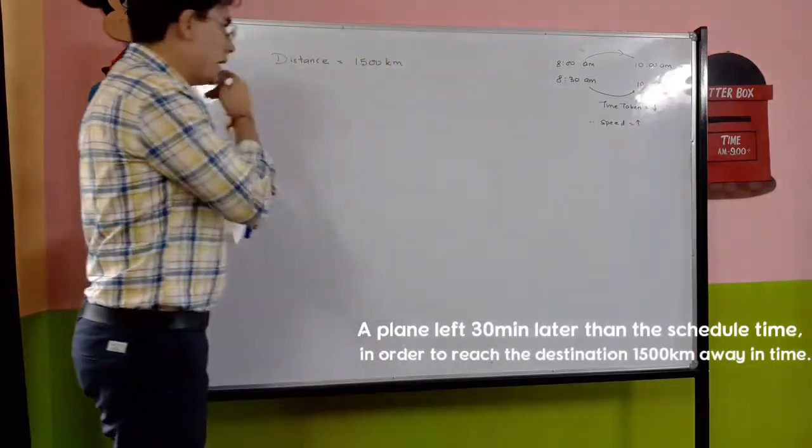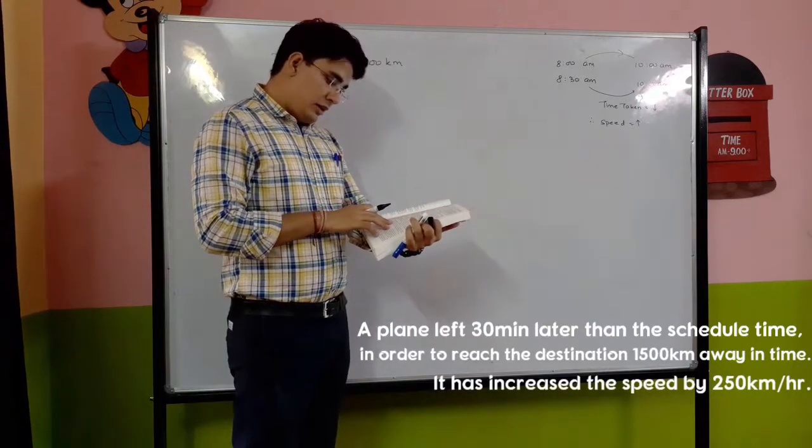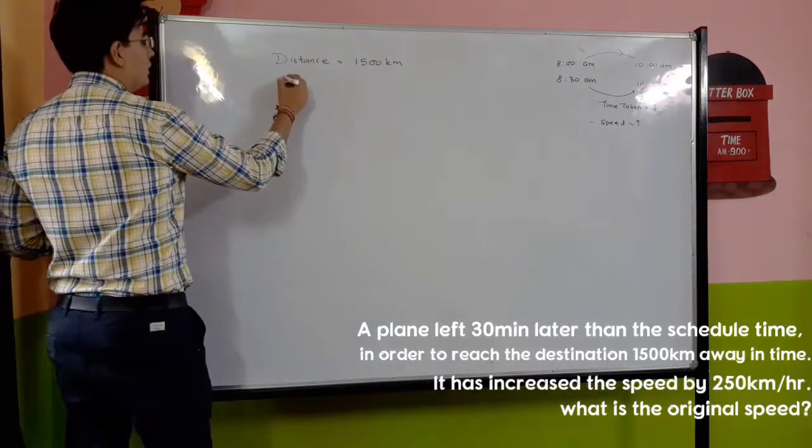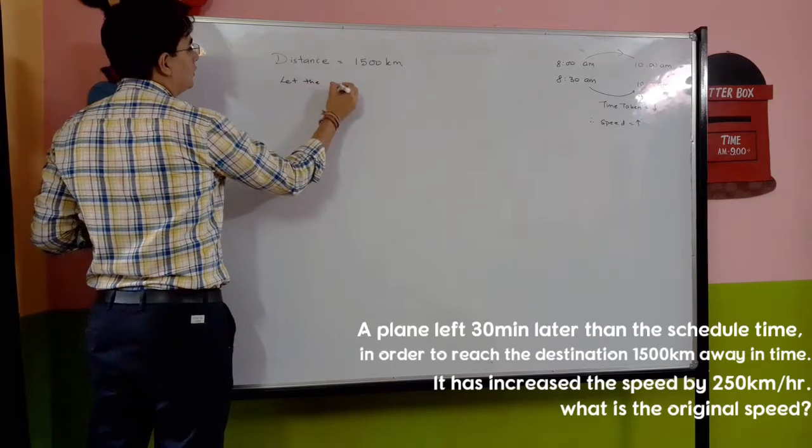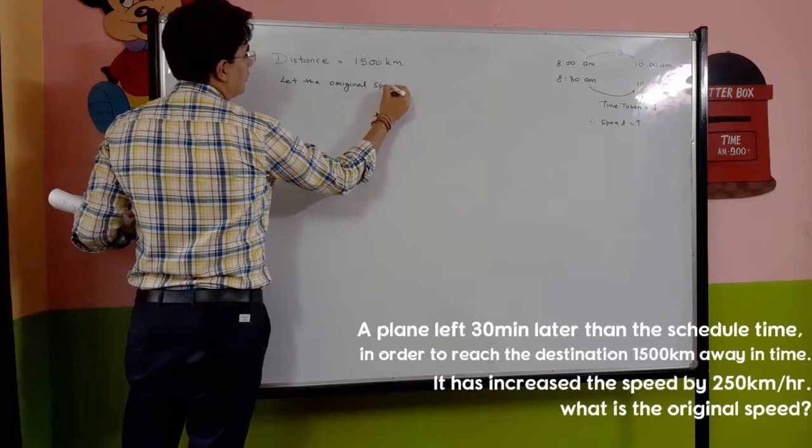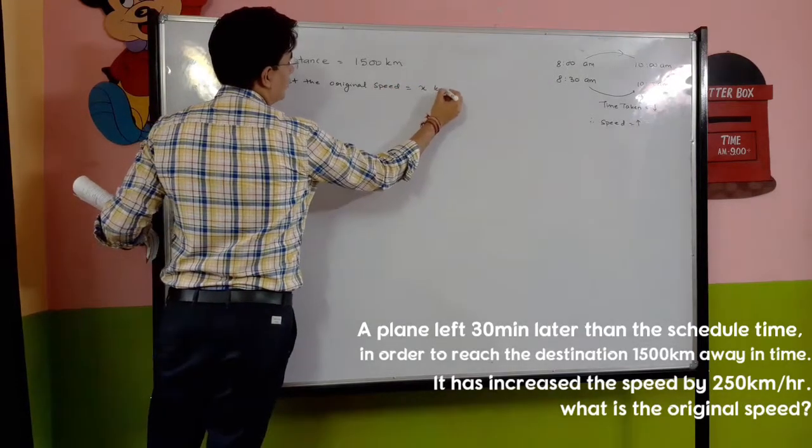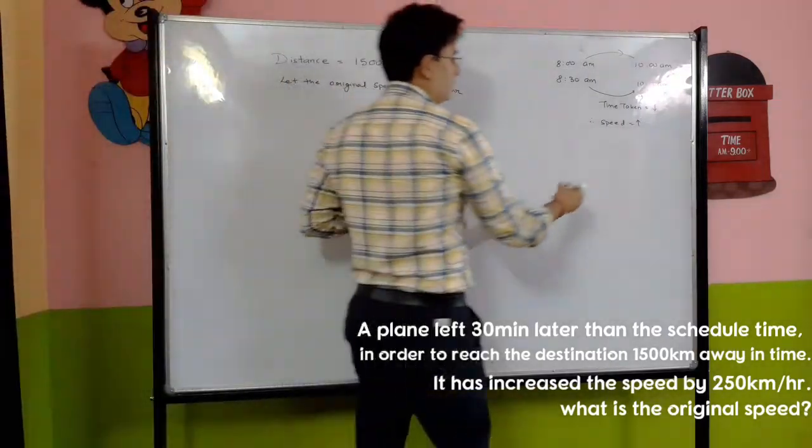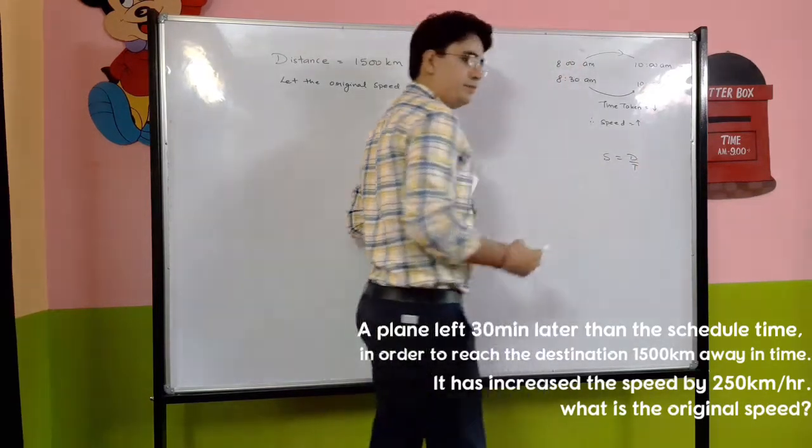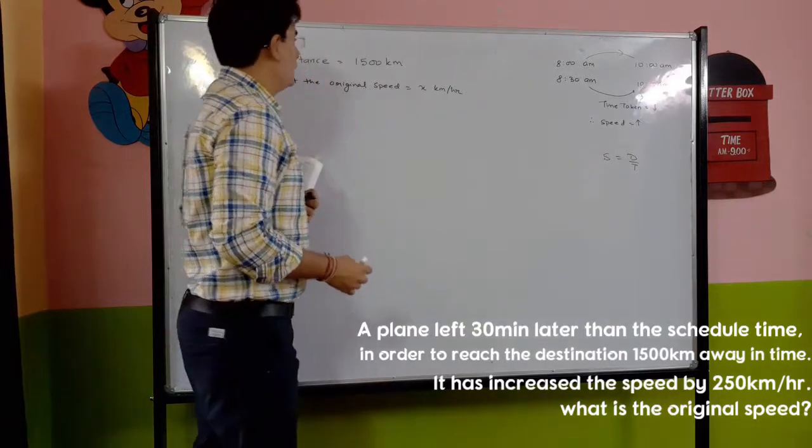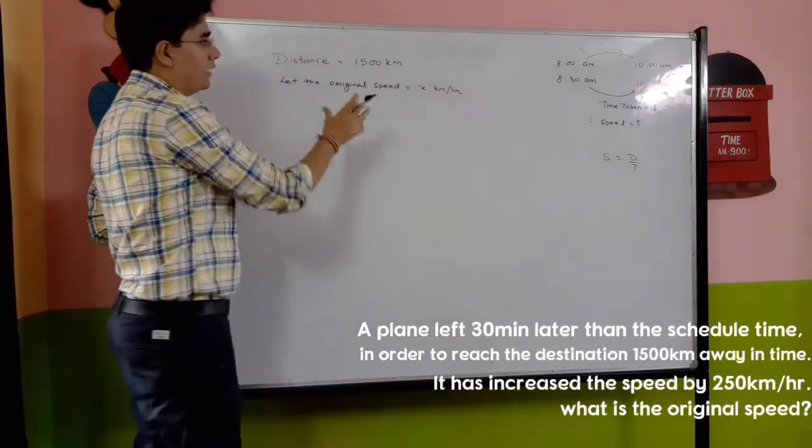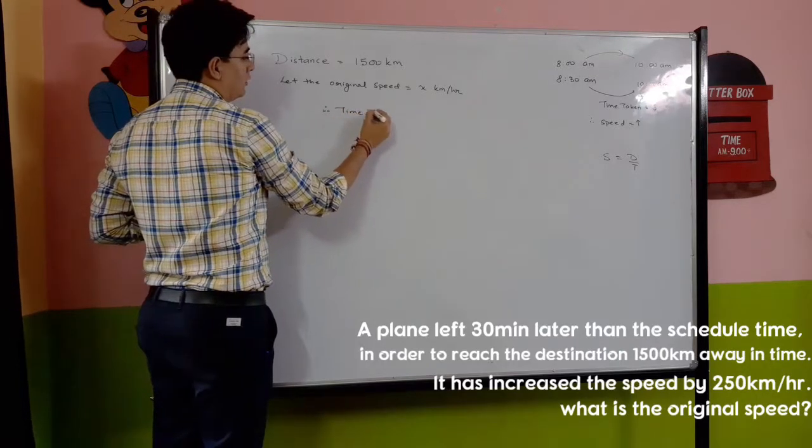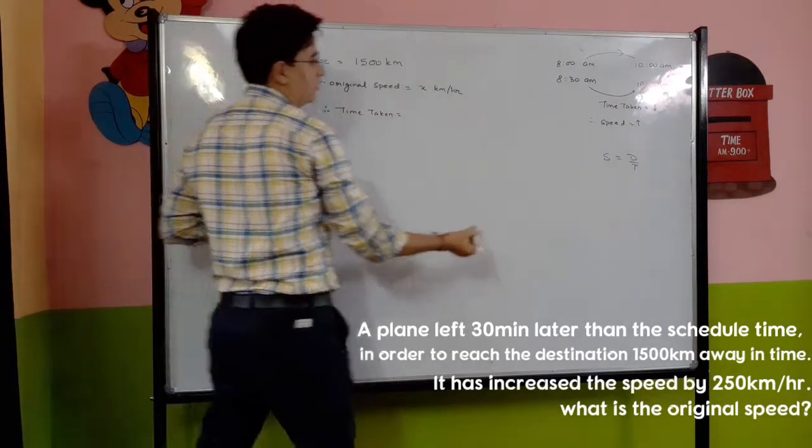So it has increased the speed by 250 km/hr. But we don't know the original speed yet. What is the original speed? Speed will be x, the original speed for now. Okay? As we know, speed equals distance over time. Okay? Can we find the time taken? Time taken through this. Therefore, time taken will be distance.